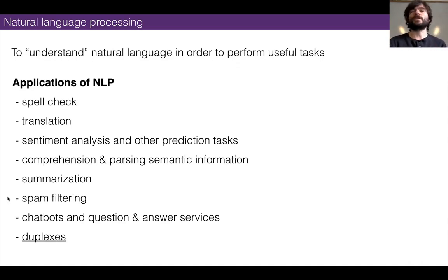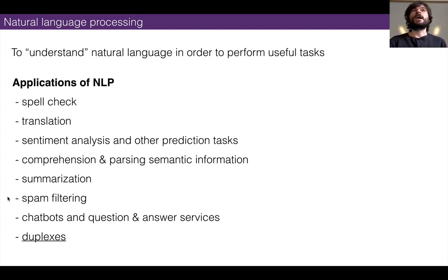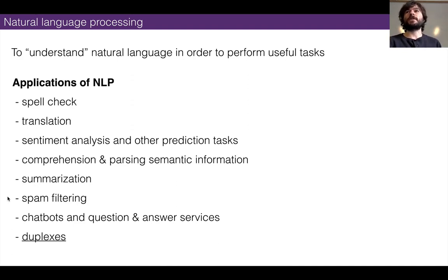So we're doing two things and will split it into halves. The first half is natural language processing, then reinforcement learning. Natural language processing, henceforth known as NLP, is basically the science of trying to get computers to understand natural language — in text form. It's usually distinct from speech-to-text, which is more audio processing. NLP deals with human language in text form and tries to understand it in order to perform tasks useful to us.